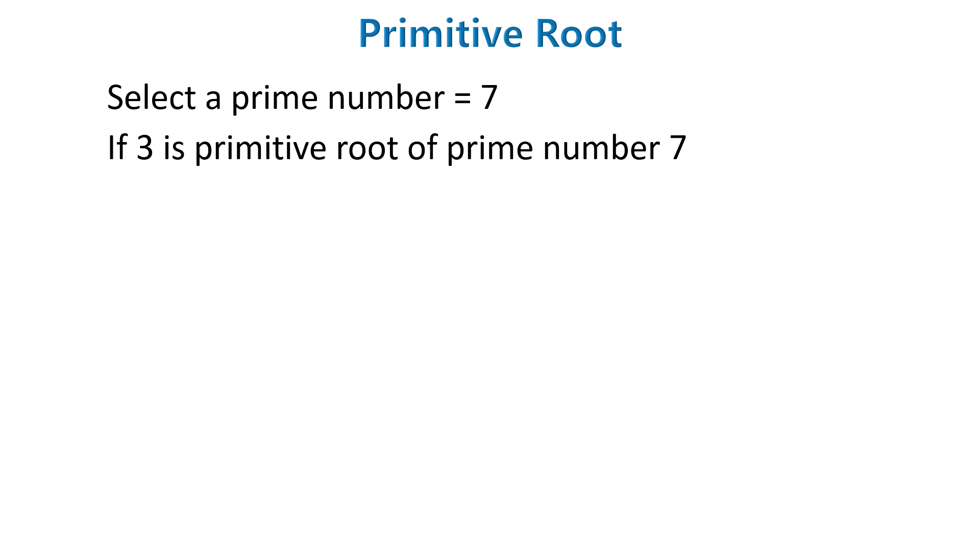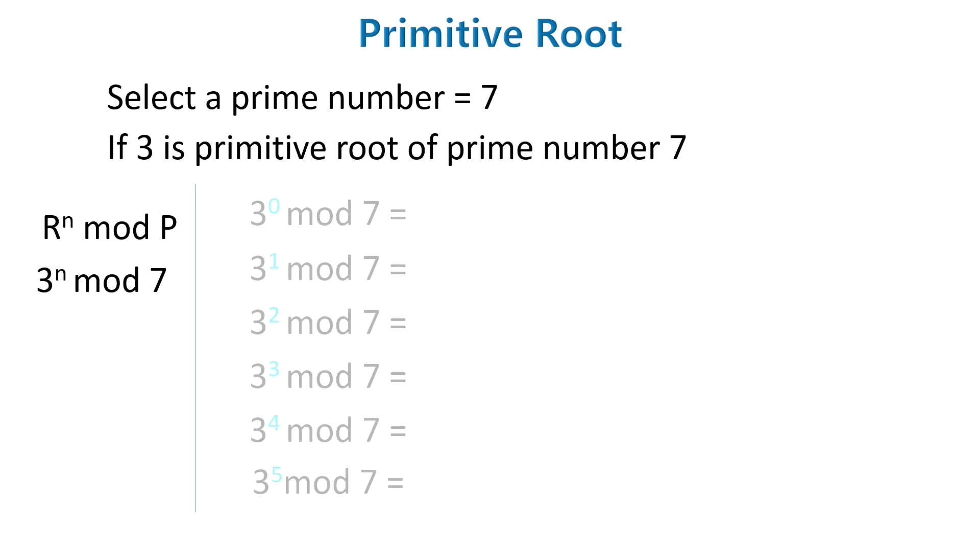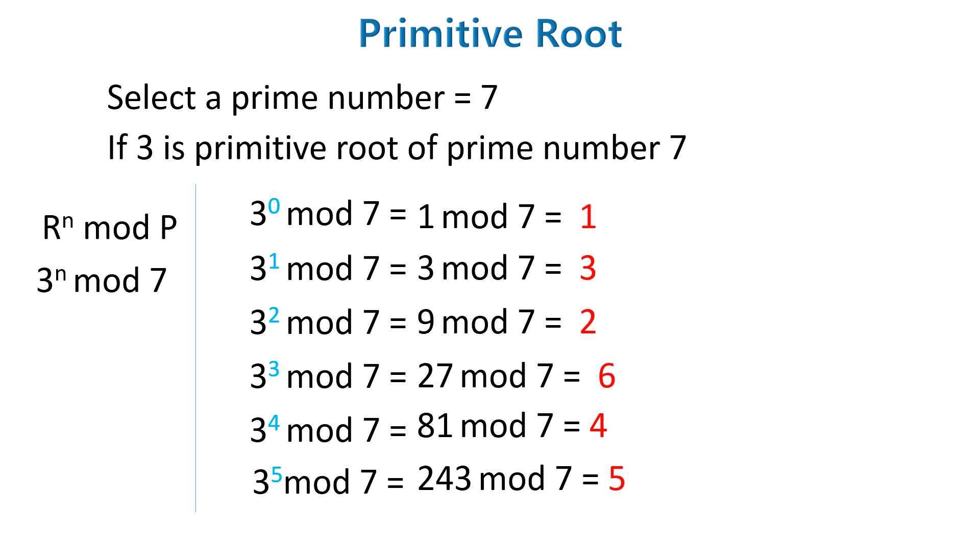Let's see another example. This time let's check if 3 is primitive root of prime number 7 or not. We have same formula r raised to the power n mod p again. Here r is 3 this time and p is 7. So it will be 3 raised to the power n mod 7. n will be from 0 to 6 which is less than 7 and let's put 0, 1, 2, 3, 4, 5 and 6 in this formula. And here is the input. And this is the solution for those inputs. As you see the output in the red color we got all the value from 1 to 6 and missing values are none. So finally 3 is primitive root of a prime number 7.